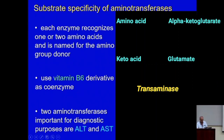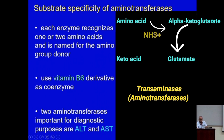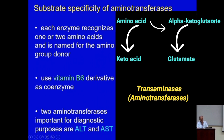All aminotransferases work on an amino acid — they remove the amine group and transfer it to an acceptor ketoacid. One of the important acceptor ketoacids is alpha-ketoglutarate. So when you add the amine group to alpha-ketoglutarate, you form glutamate, the amino acid glutamate. Many amino acids will eventually donate that nitrogen to alpha-ketoglutarate to give you glutamate.